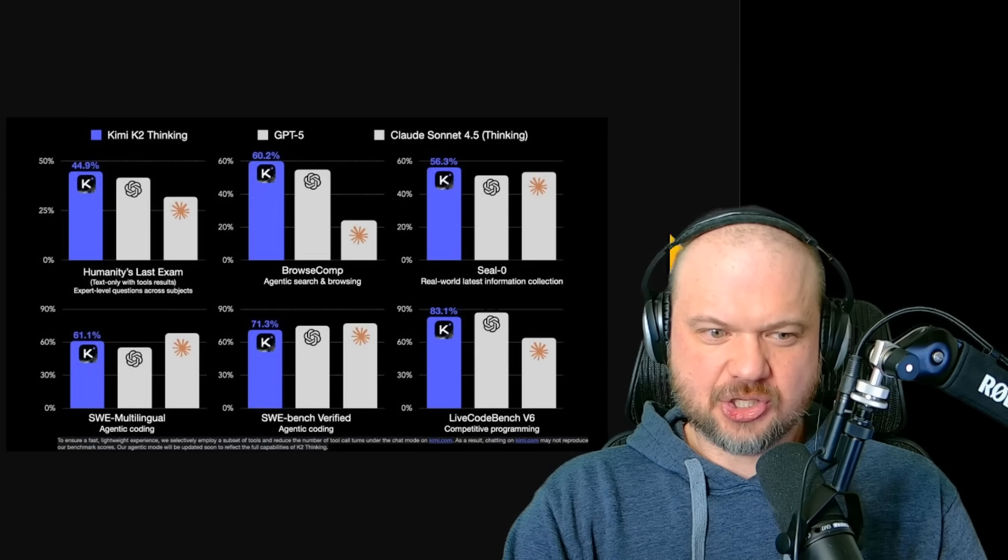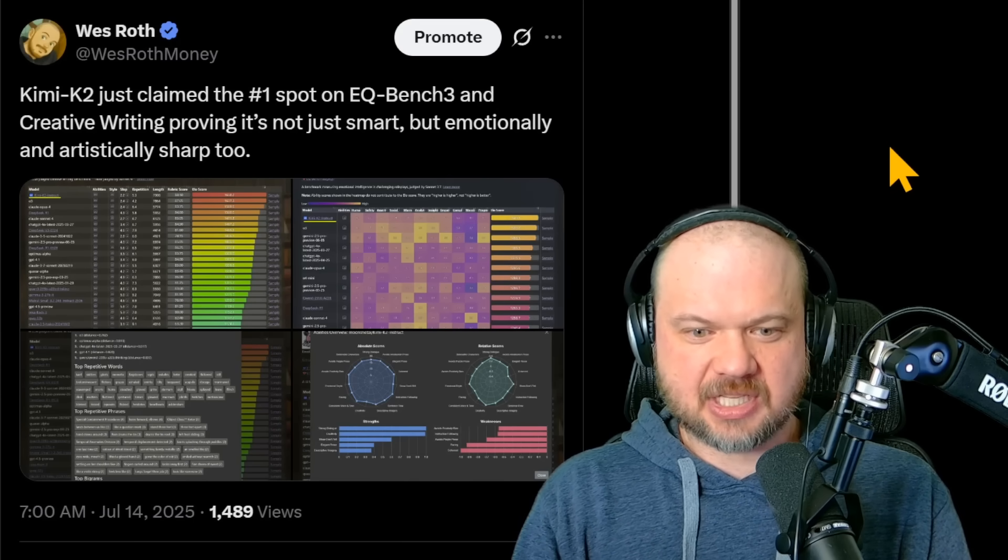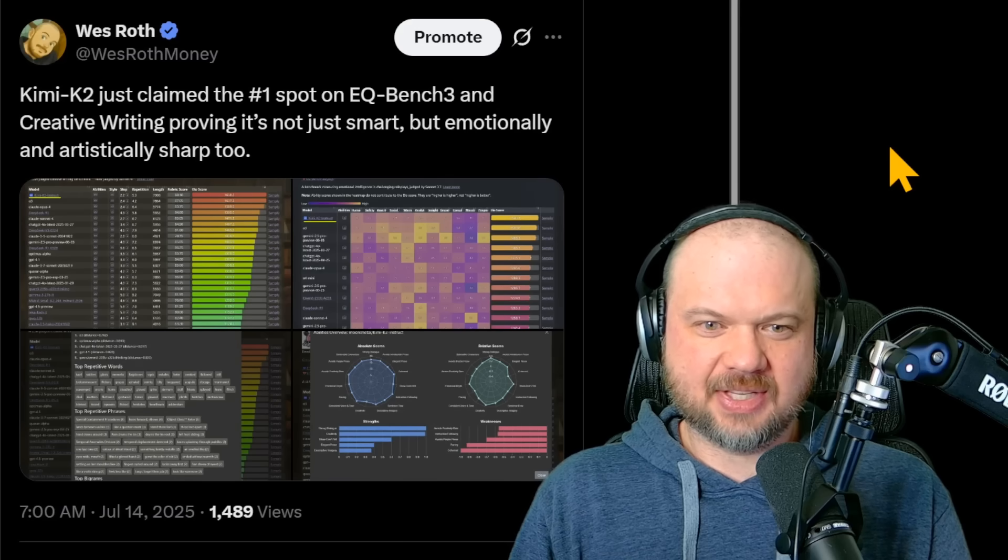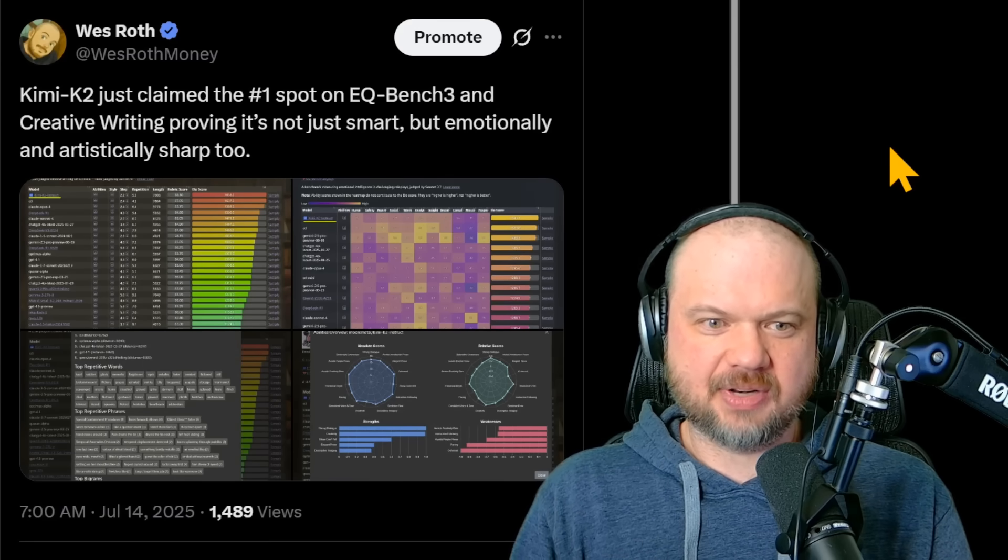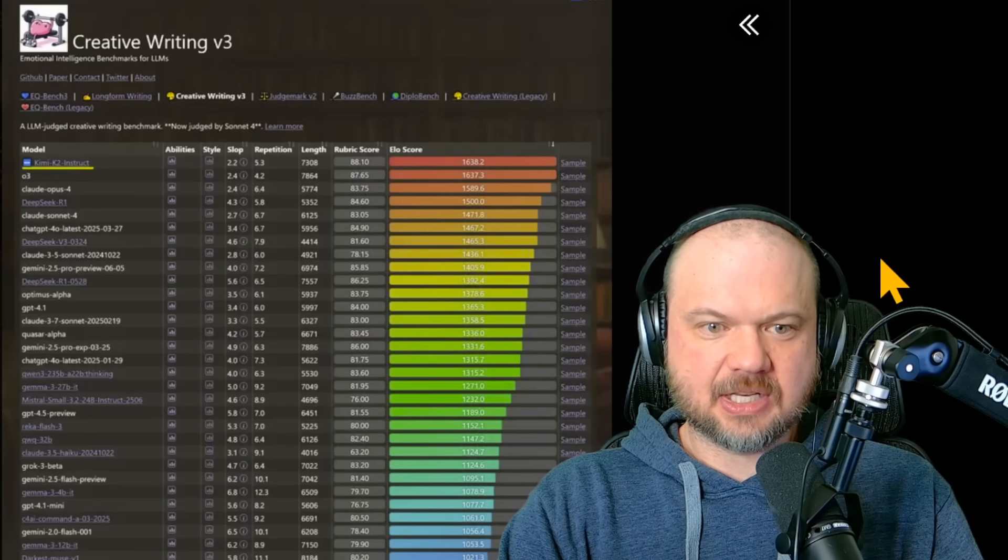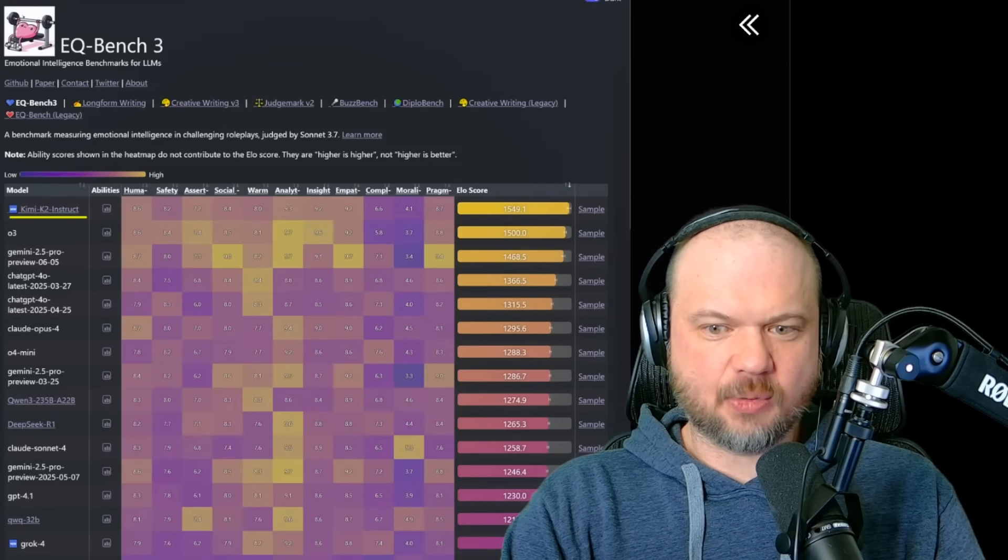By the way, it's not just good at these specific tasks that they've cherry-picked. It's also very good on other benchmarks that maybe are not as well-known, maybe not as popular, but are very interesting as well. The EQ Bench 3 for creative writing, the Kimi K2 is at the top. So it takes the number one spot. The various abilities that you have while writing, across the board it does very, very well.